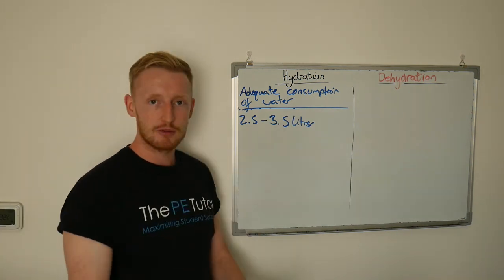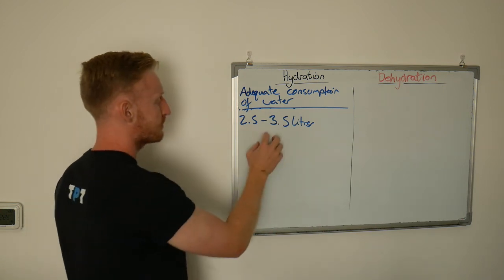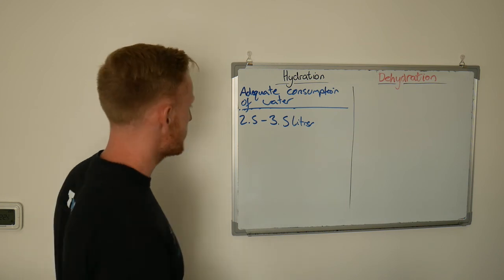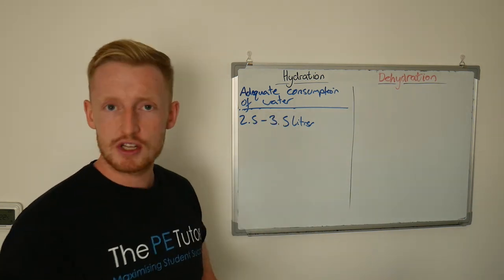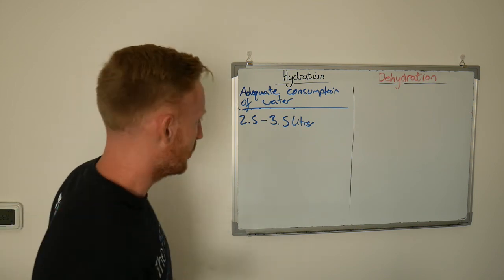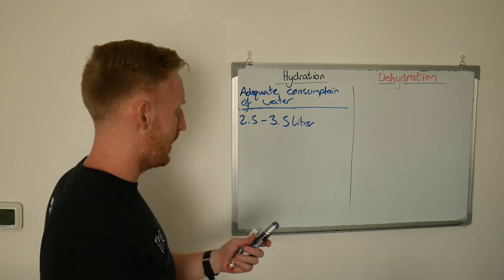And this doesn't necessarily have to be water from a water bottle or a tap. This can be sourced from fruits or vegetables which are high in water, or perhaps from other dietary intakes such as juices or squashes or yogurts or other foods as well. But 2.5 to 3.5 liters of water consumption per day.